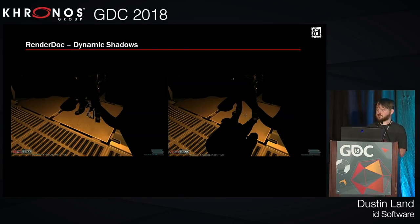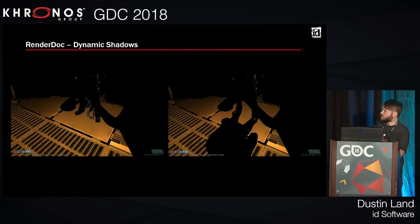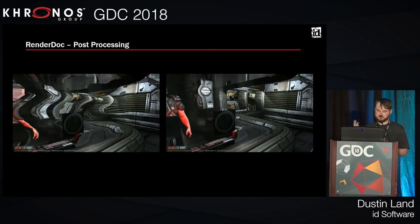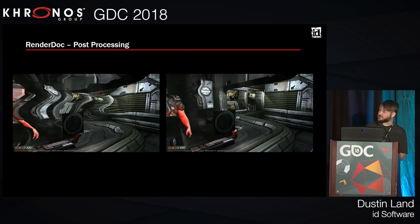A few areas that helped me: dynamic shadows were broken right away — the poor zombie was dragging around a shadow tail. There were color channel issues right off the bat that stuck out immediately just looking at the texture attachments. And one day somebody reported that the Doom Marine had a concussion looking at glass — a very odd condition, but we got that fixed up right away.